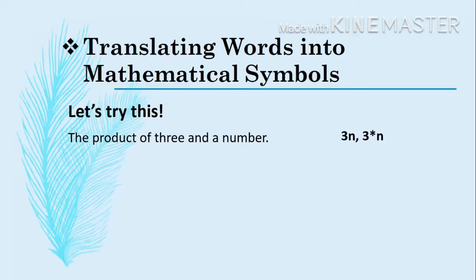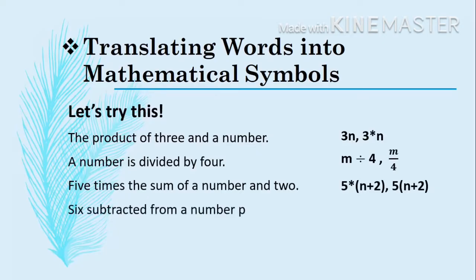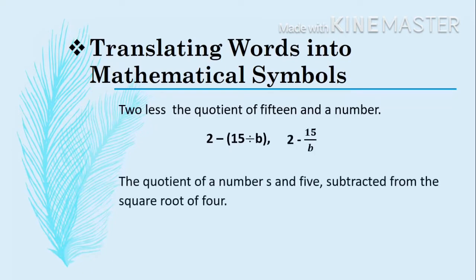Let's try the next ones. You can pause the video and try translating on your own before the answer is revealed. Next: '5 times the sum of a number and 2.' Next: '6 subtracted from a number P.' Next: '2 less the quotient of 15 and a number.' And lastly: 'the quotient of a number S and 5 subtracted from the square root of 4.'